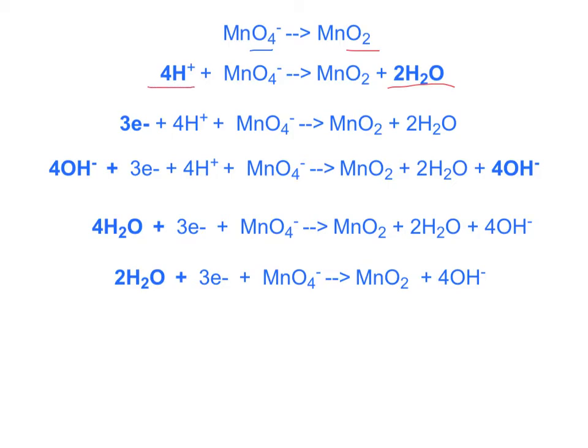And now we want to balance the charge. On this side, we have 1- plus four positive charges. Now on the right side, we don't have any charge at all. Four plus and one minus gives you a 3+ charge on your reactant side. We have to add three electrons to get that down to a zero charge.